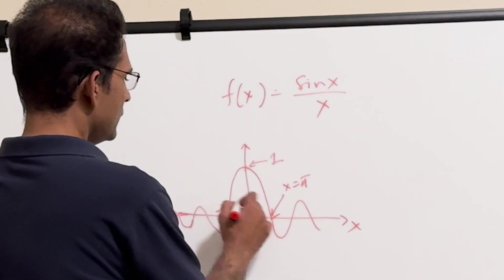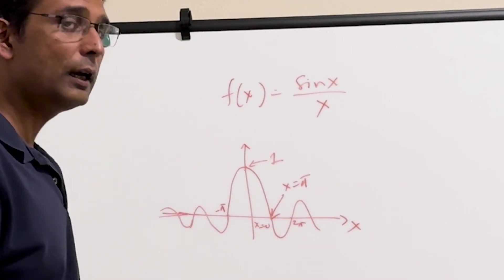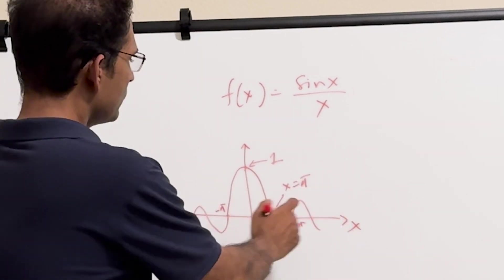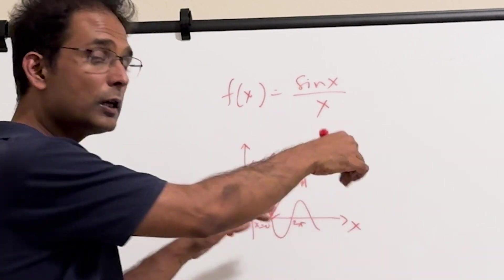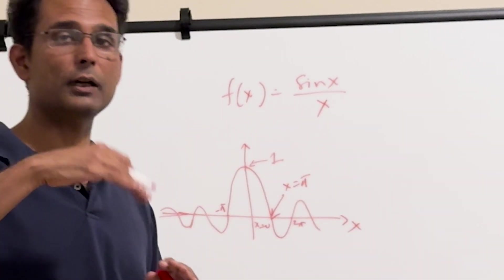So similarly, this is minus pi, this is 2 pi, and so on. And the graph actually falls down gradually, so it's oscillatory, but the amplitude of the oscillation gradually decreases.